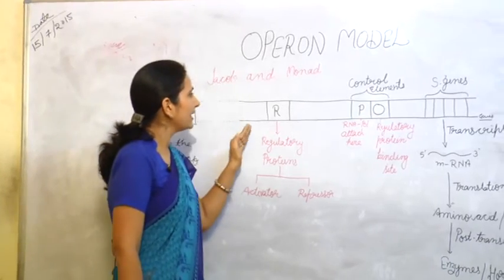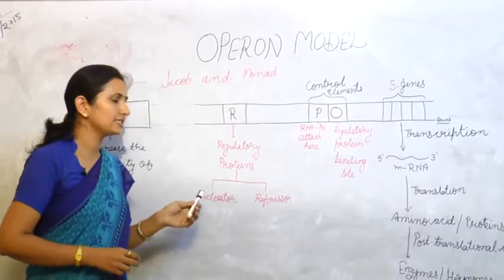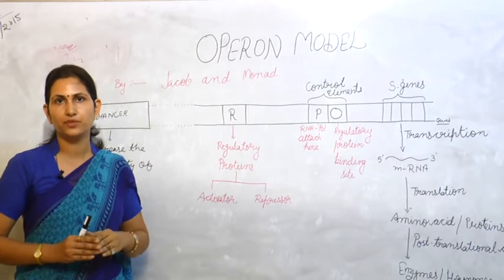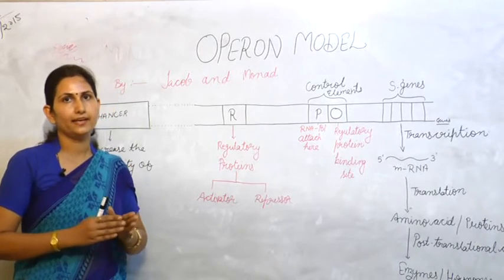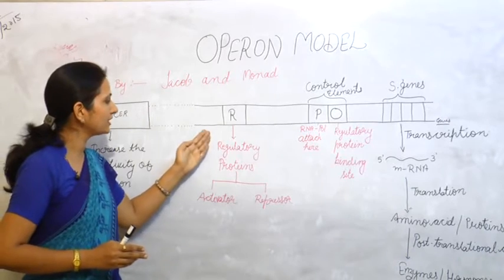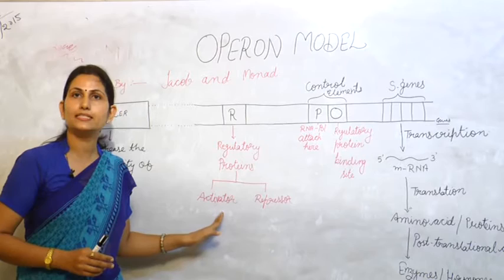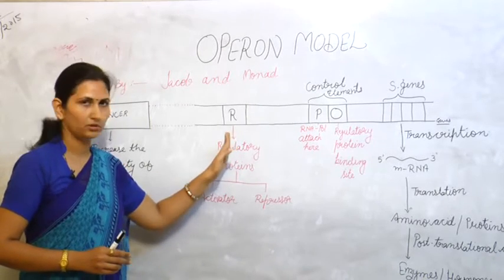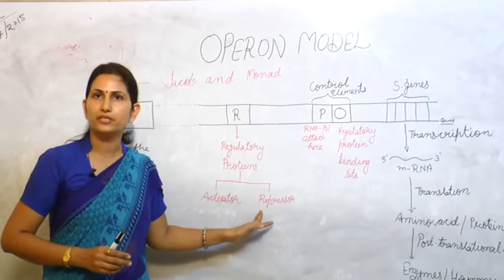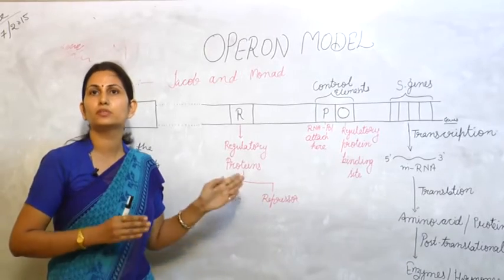Next we have the regulatory gene. The regulatory gene secretes regulatory proteins. There are two kinds of regulatory proteins: one is the activator and another is the repressor. If the regulatory gene secretes activator proteins, it will always help in turning on the operon. While if the regulatory gene secretes the repressor protein, it will always help in turning off the operon.